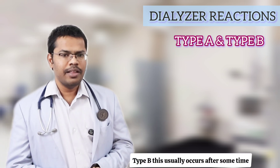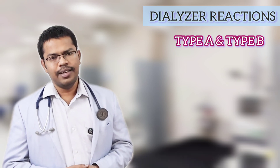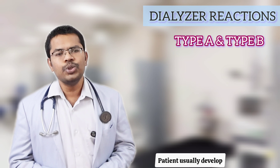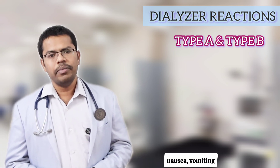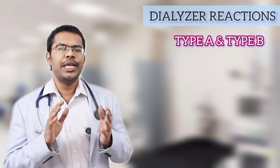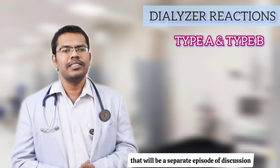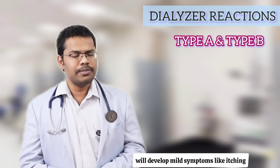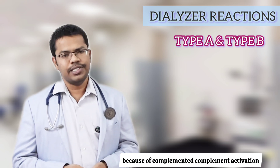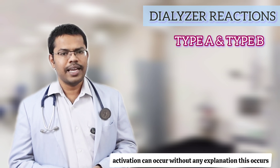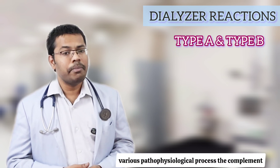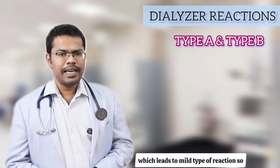Type B reaction usually occurs after some time — approximately after 30 minutes from the start of dialysis. These are not severe. Patients usually develop mild symptoms like itching, nausea, vomiting, and mild palpitations. These are because of complement activation. Without any specific explanation, the complement system gets activated as blood passes through the dialyzer through various pathophysiological processes, leading to this milder type of reaction.